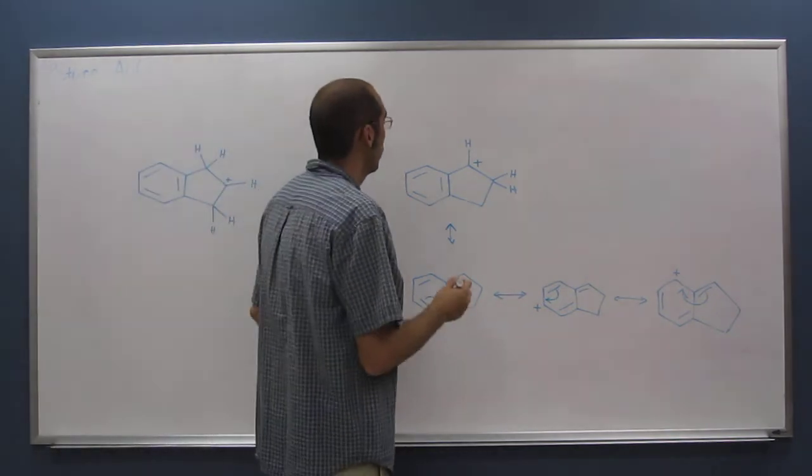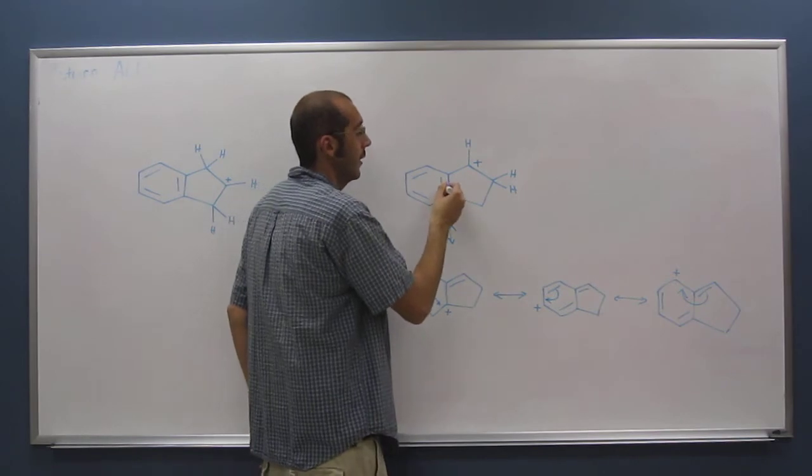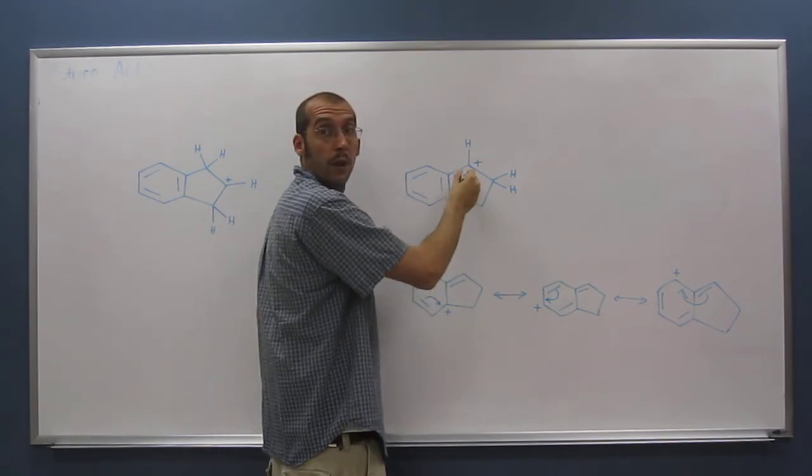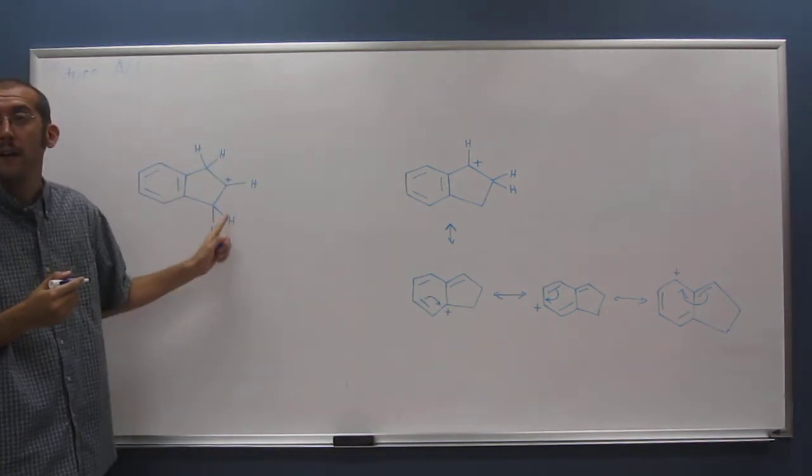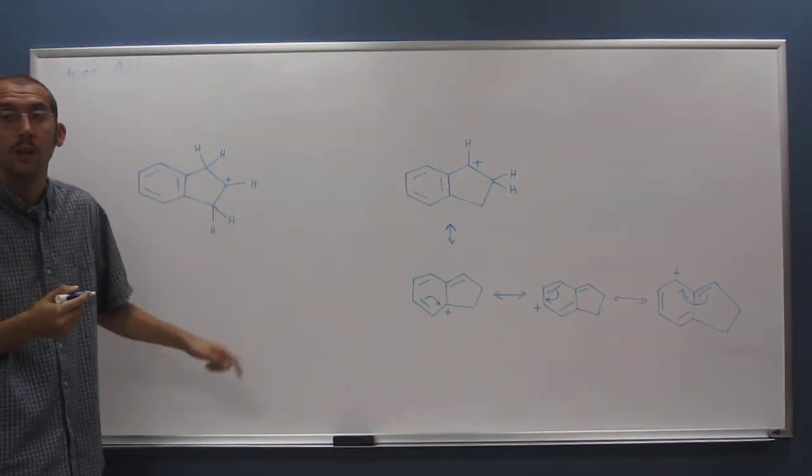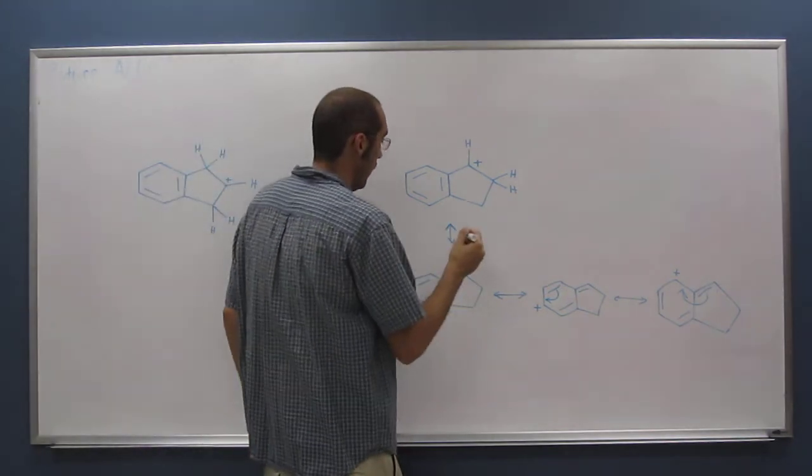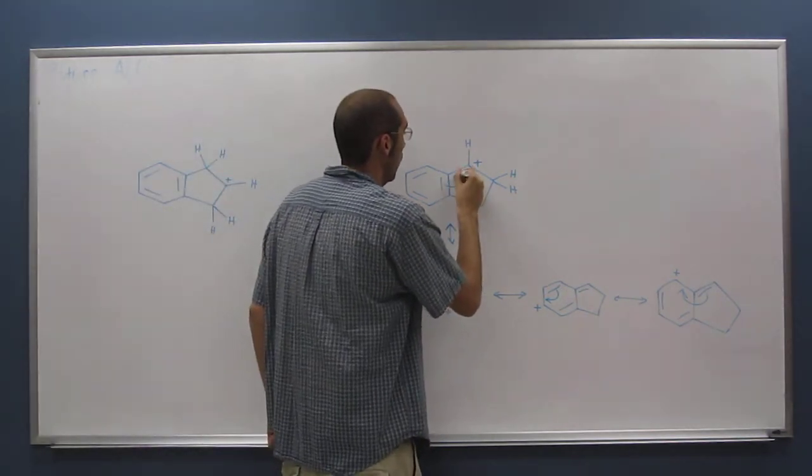So if we look here, what we can do is take a pi bond and move it over. Here, we don't have a pi bond right next to that positive charge. So here, we can do that, right?